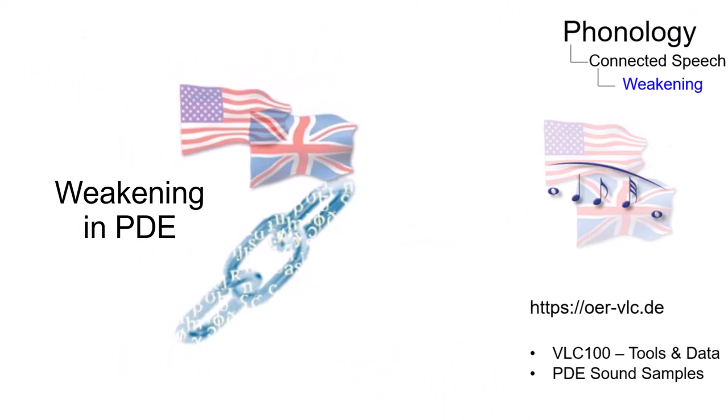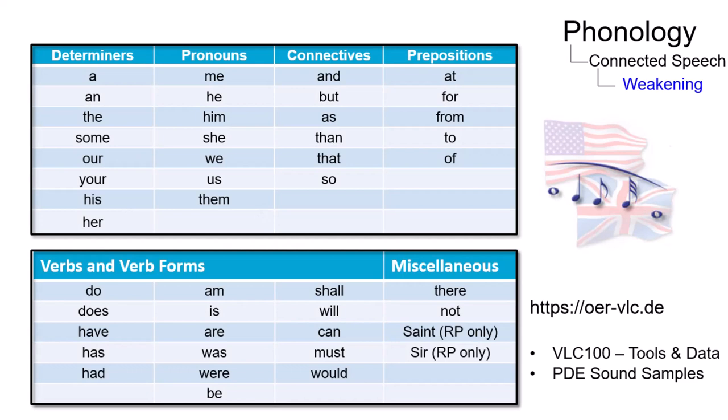In present day English, this weakening process affects about four dozen monosyllabic function words, which occur very frequently, more than one word in five in conversational English.